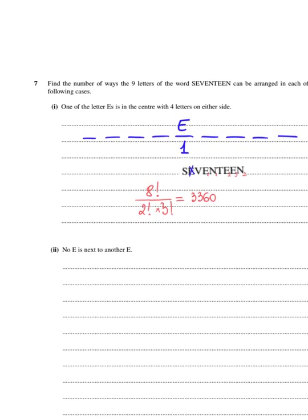The second question is interesting: no E is next to another E. Let's start arranging first the letters that are not E. I have four E's, therefore I have five other letters remaining: S, V, N, T, N. I can arrange these on five positions in 5! ways. However, I have two repeating N's, so I need to divide by 2!. Now, where do I put the four E's so that no E is next to each other?